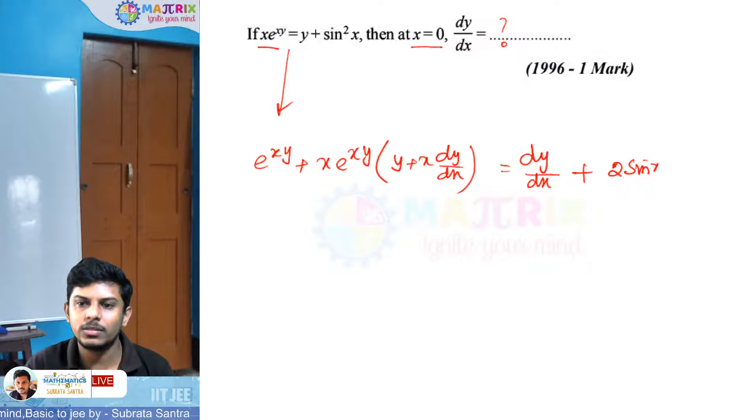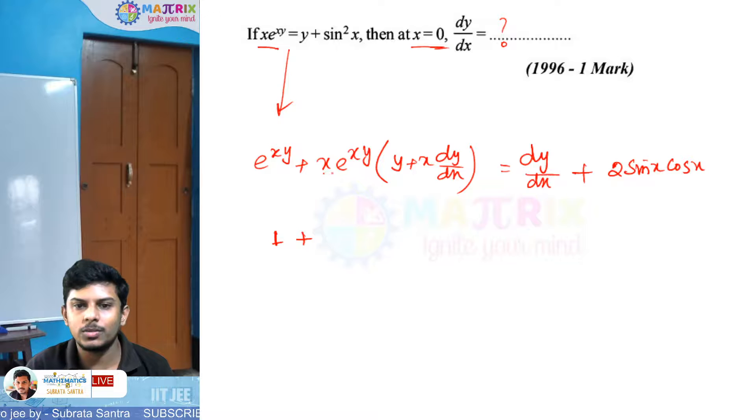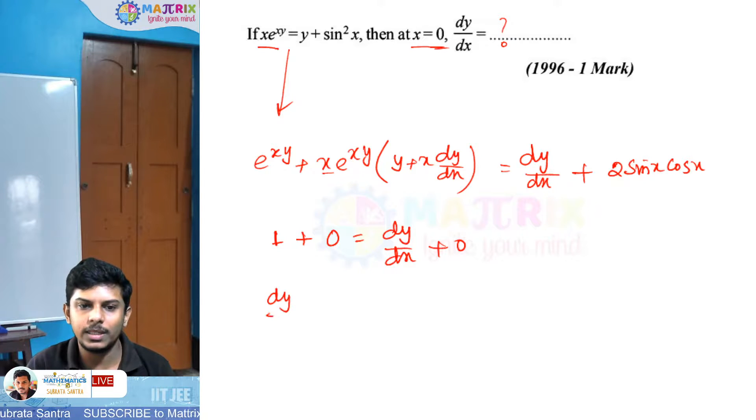Now substitute x equals 0. We get e to the power 0 which is 1, so 1 plus 0 equals dy by dx plus sin 0 which is 0. Therefore, 1 plus 0 equals dy by dx, giving us dy by dx at x equals 0 is 1.